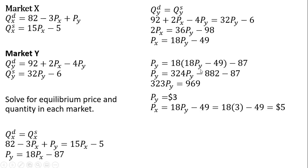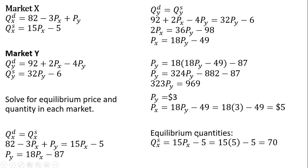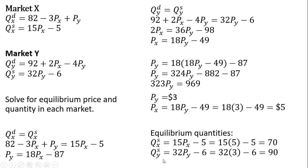So we've got the equilibrium price in both markets. Now let's get the equilibrium quantity. To get the equilibrium quantity in the market for good X, the easiest thing to do is take the price of good X and plug it into the supply equation: 15 times 5 minus 5, so the equilibrium quantity in the market for good X is 70 units. To get the equilibrium quantity in the market for good Y, take the equilibrium price of good Y and plug it into the supply equation for good Y, and you get an answer of 90 units.